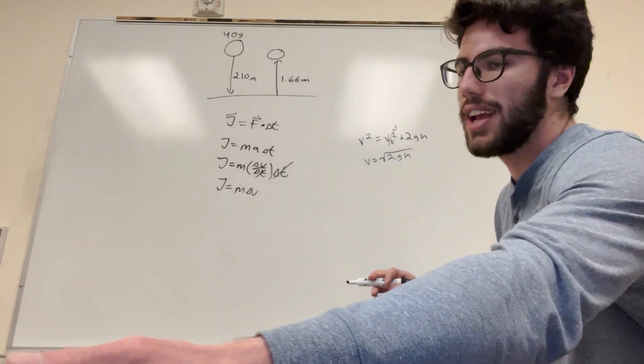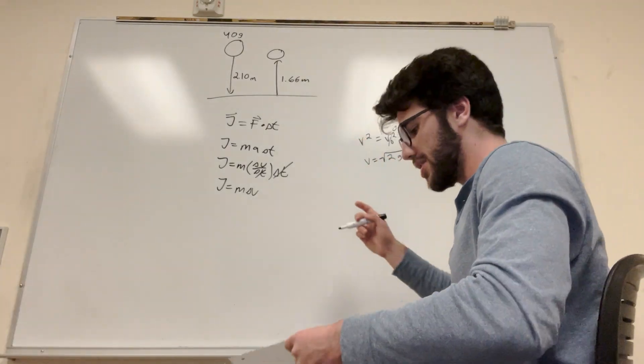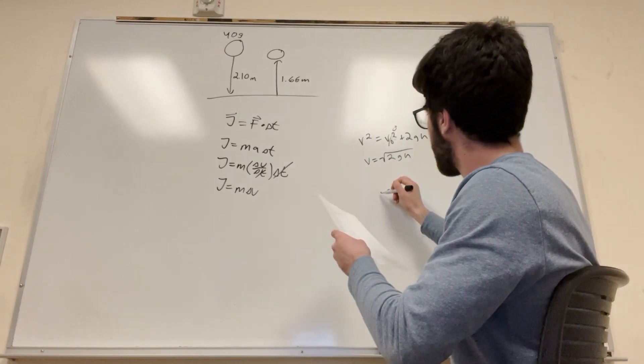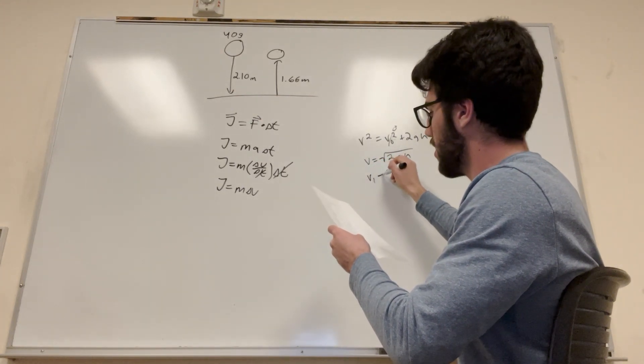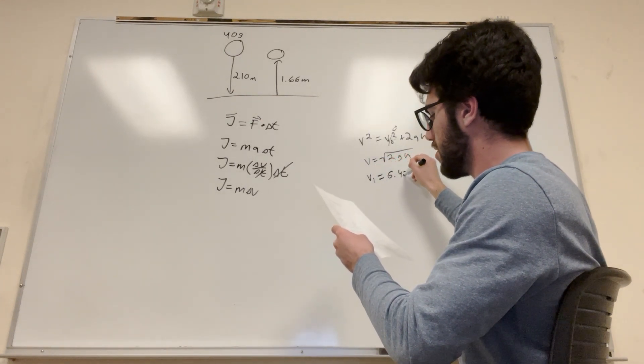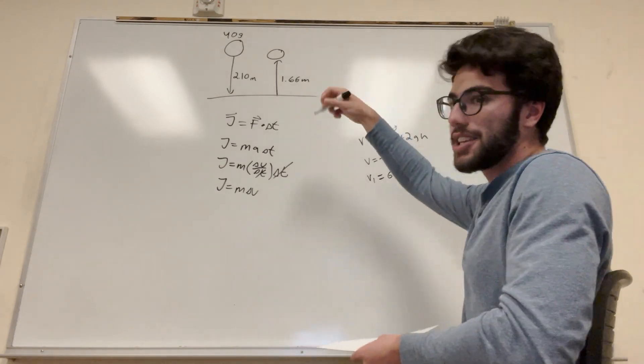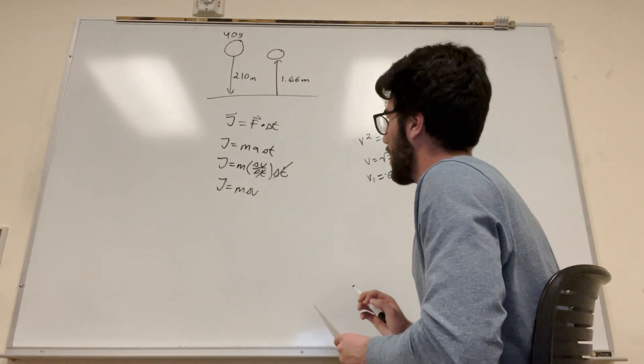We have gravity, of course, 9.8, and height is 2.10. So you do this, and you get the velocity here on part 1 is equal to 6.42 meters a second, but it's actually downward, so it's going to be negative. Okay, nice.